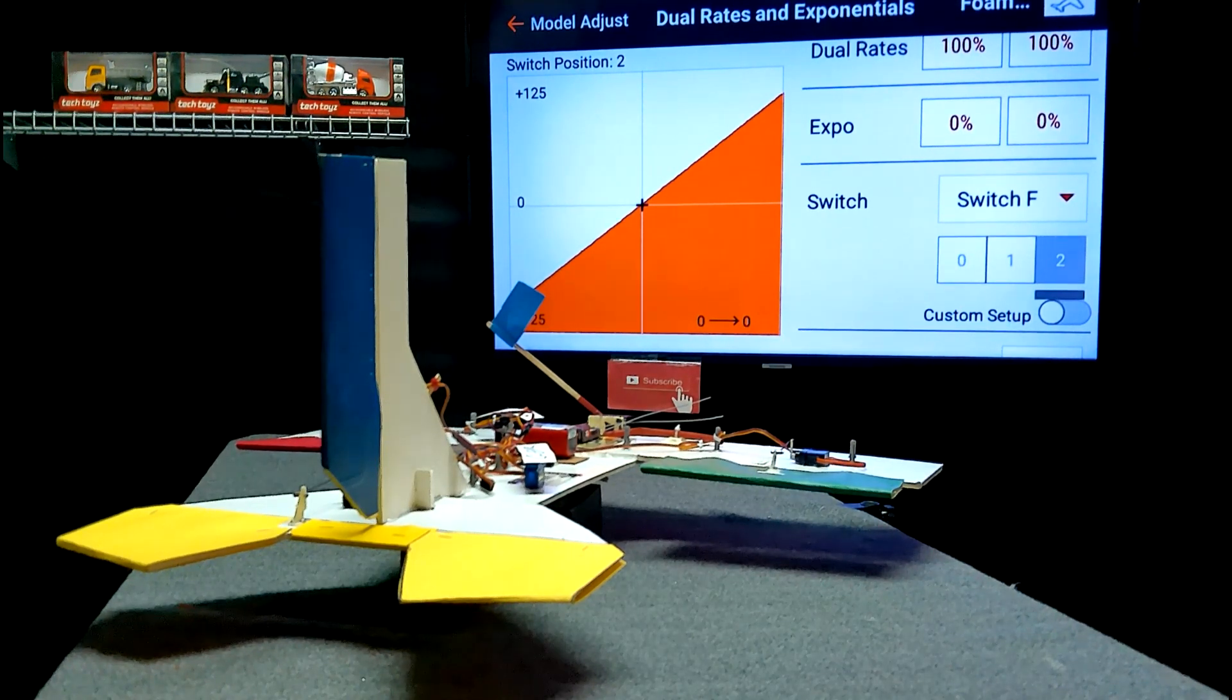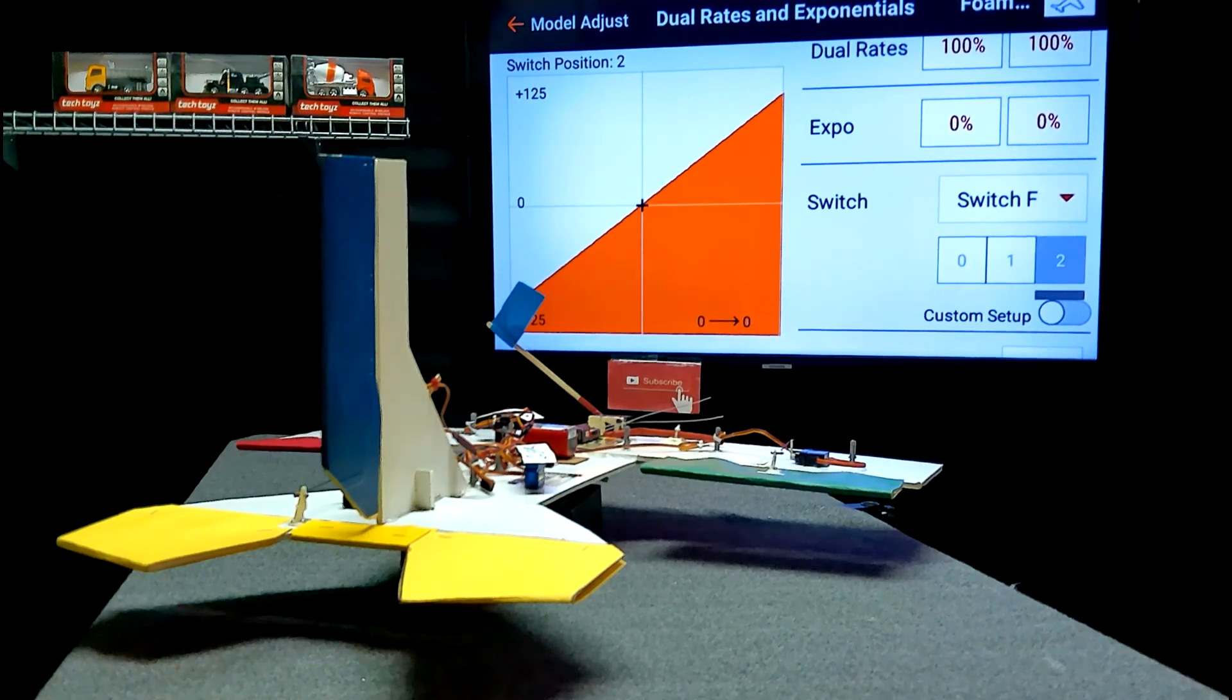This is an ix-12 but all the other transmitters are the exact same ways of the setup, but it might look different on your screen versus my screen. The DX, the D8, the NX, all the transmitters the Expo is the same and the dual rates.